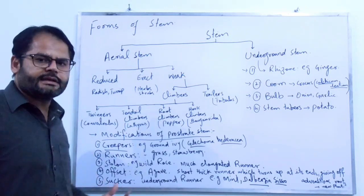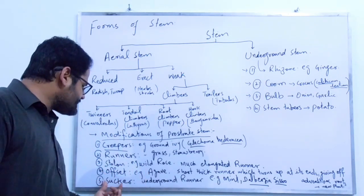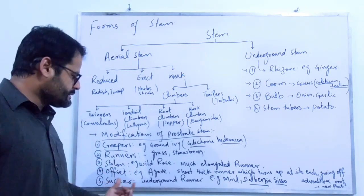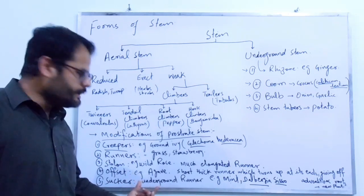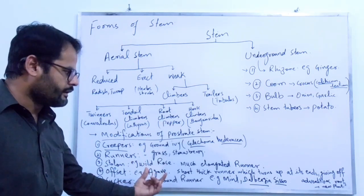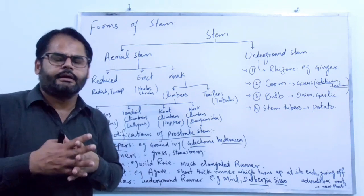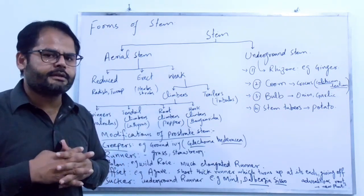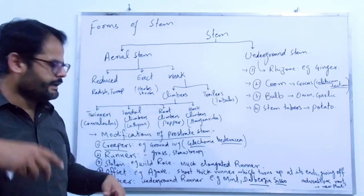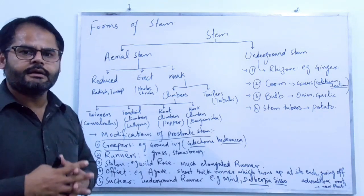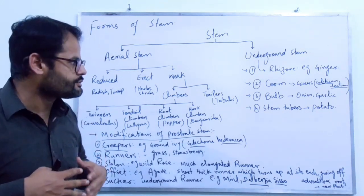The fifth category of prostrate stem is called sucker. Sucker is an underground runner. It is found in mint, Mentha piperita, and in higher plants like Dalbergia sissoo.